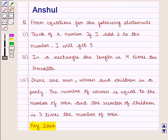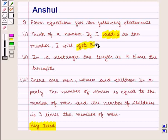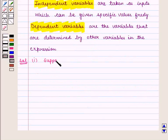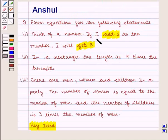From the question, we need to write the equations for the given statements. The first statement is: think of a number — if I add 2 to the number, I will get 5. Here, according to the statement, we have to think of a number which has variable values. So we suppose the number is x. Now, I have to add 2 to this number so that I get 5.